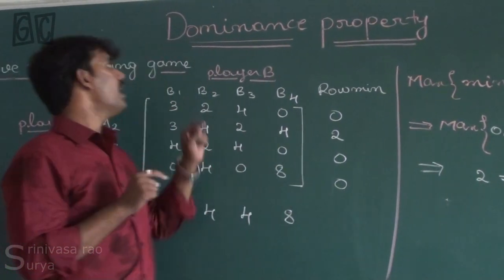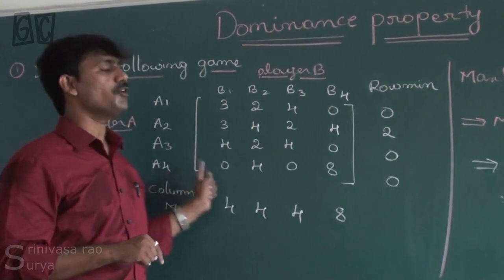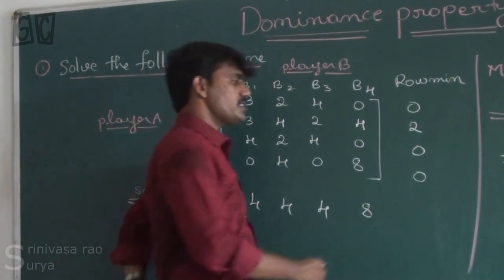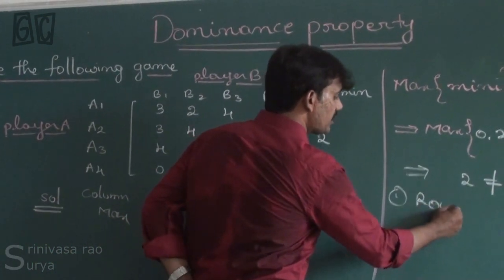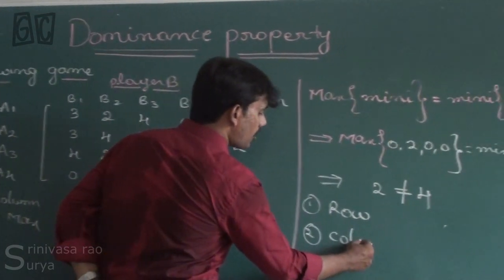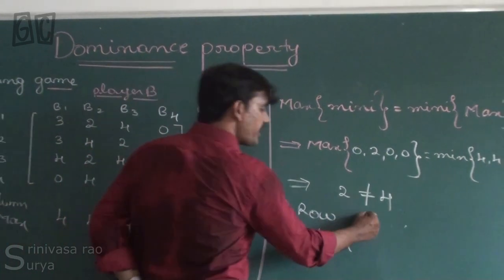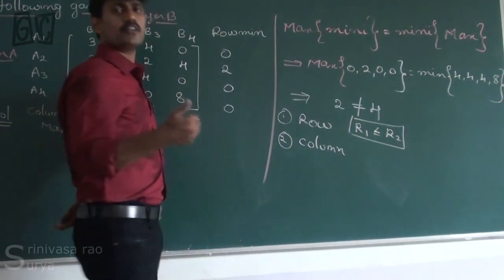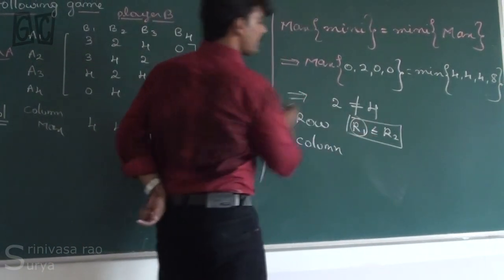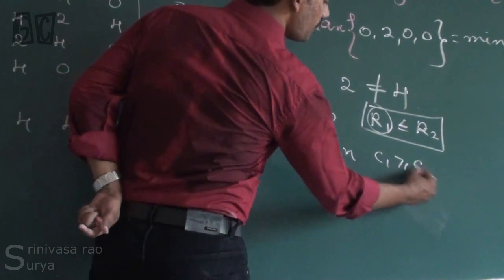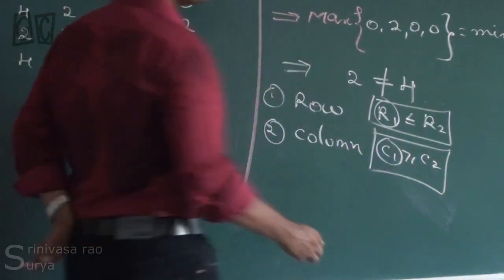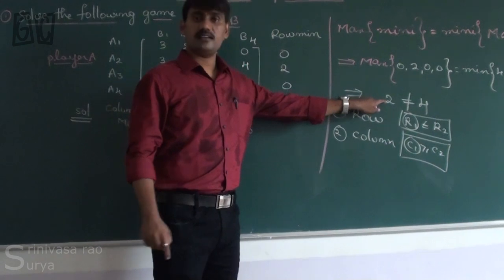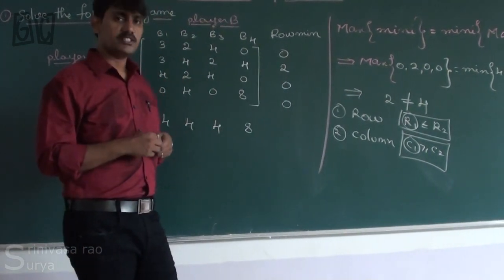Now we are going to apply the dominance principle to reduce this 4×4 matrix into a 2×2 matrix. There are two procedures: row comparison and column comparison. For row comparison: if all elements in row R1 are less than or equal to all elements in R2, then delete R1. For column comparison: if all elements in C1 are greater than or equal to all elements in C2, then delete C1.